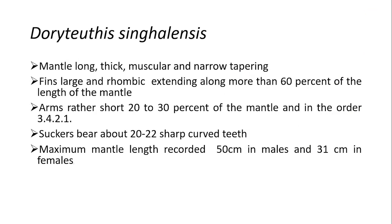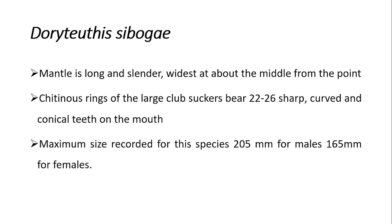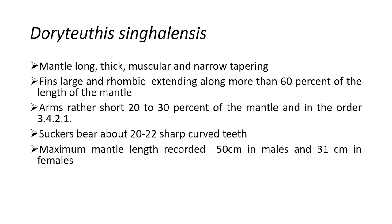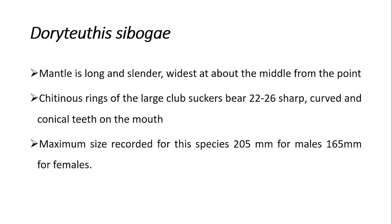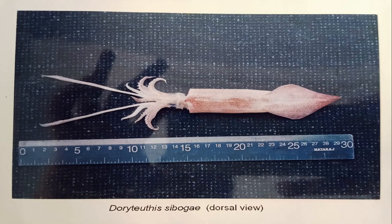Next we move to the species Doriteuthis sibogae. The taxonomical key characteristics are: the mantle is long, thick, muscular, narrow, and tapering. The fins are large and rhomboidal, extending along more than 60 percent of the mantle length. The arms are rather short — 20 to 30 percent of the mantle length. The arm formula is 3-4-2-1. The sucker rings bear about 22 short curved teeth. You can see the photographic images showing the arms at 20 to 30 percent of the mantle length.